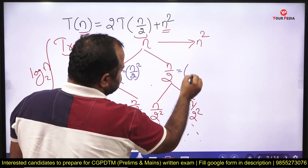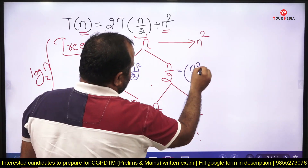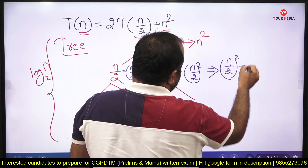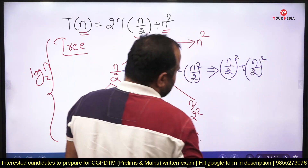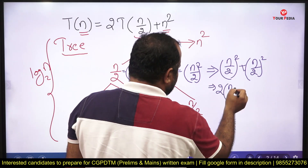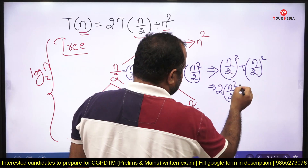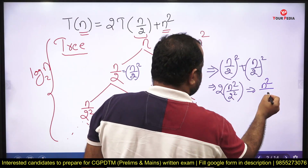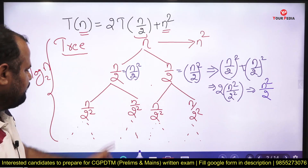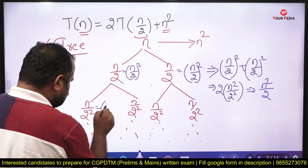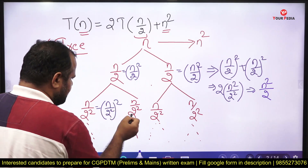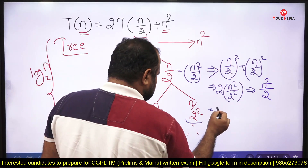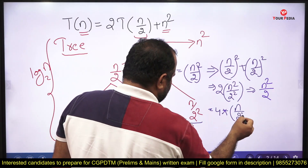At the second level, both nodes have size n/2, so each has cost (n/2)². Adding the total cost at that level: (n/2)² + (n/2)² = 2·(n²/4) = n²/2. At the next level, each node has size n/2², so its cost is (n/2²)², and there are 4 such nodes.